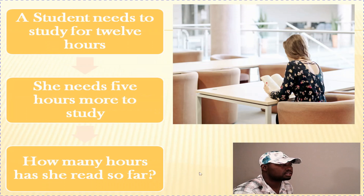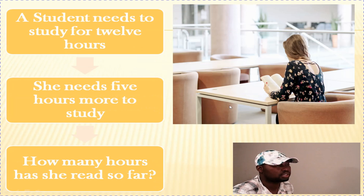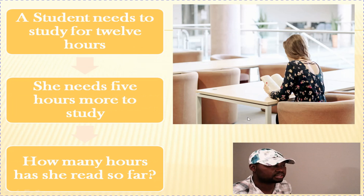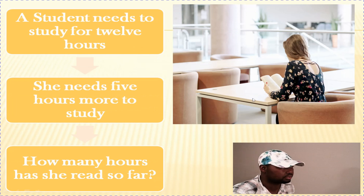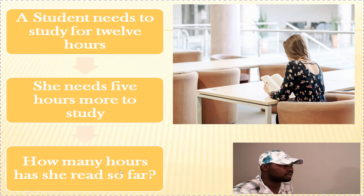The first exercise: a student needs to study for 12 hours in order to pass her examinations. She needs to read for 12 hours total. We are told she needs five more hours to study, meaning she has already studied for a certain number of hours. So, how many hours has she studied so far?